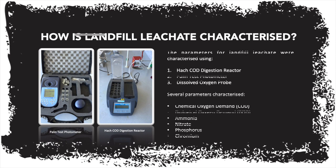How is landfill leachate characterized? The parameters for landfill leachate were characterized using the HECCORD digestion reactor, Palintest photometer, and the dissolved oxygen probe. These were used to characterize the chemical oxygen demand, biological oxygen demand, ammonia, nitrate, phosphorus, and chromium. As you can see on the left, the Palintest photometer was used to characterize ammonia, nitrate, phosphorus, and chromium, while the HECCORD digestion reactor characterized COD concentrations, and the dissolved oxygen probe characterized the biological oxygen demand.